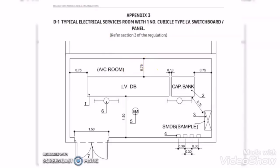As per DIVA regulation, when we are placing any LV panel, the distance between the LV panel back wall and the LV room wall should be minimum 0.7 meter. In the same way, the distance between the side wall of the LV room and the side wall of the LV panel must be 0.75 meter. If either of these distances is less than the minimum required, DIVA will come and reject it.